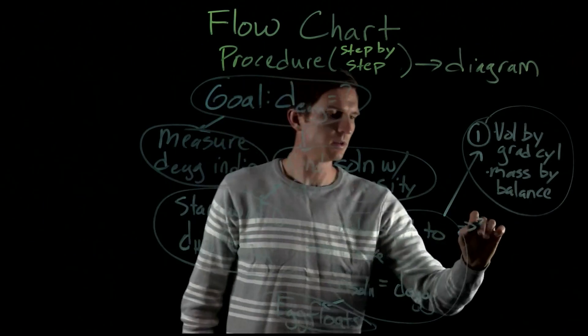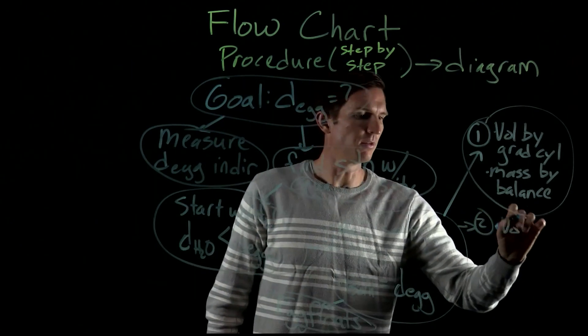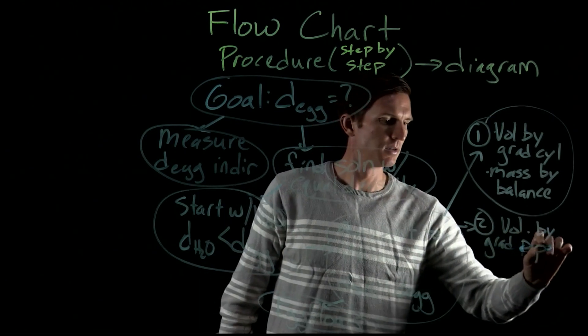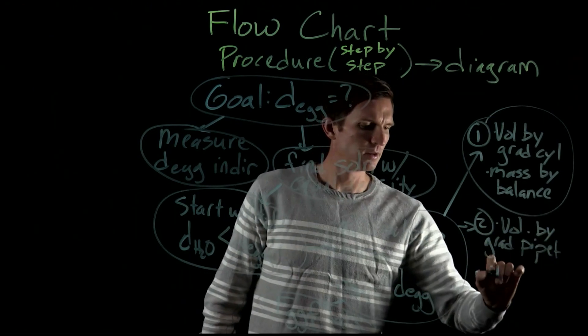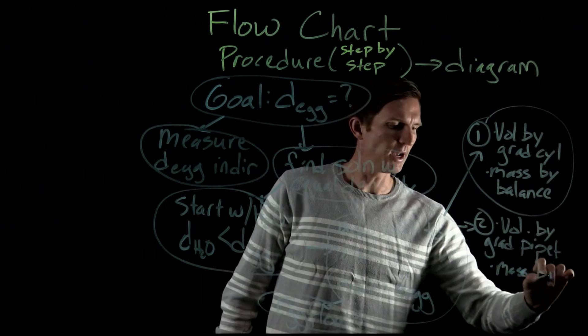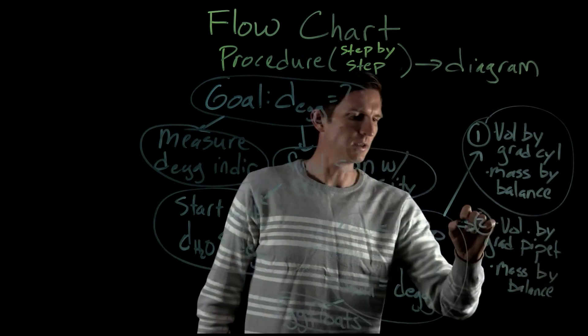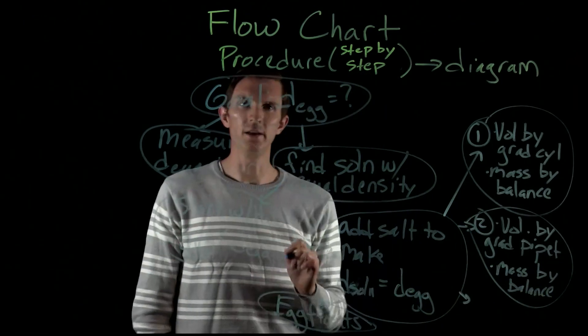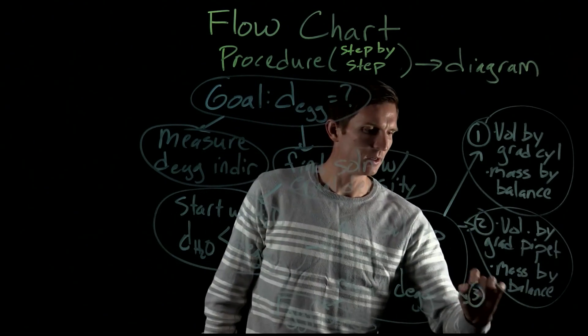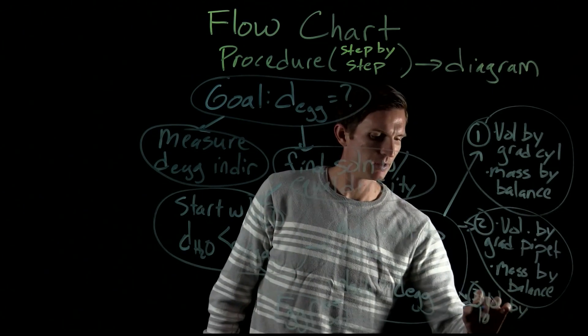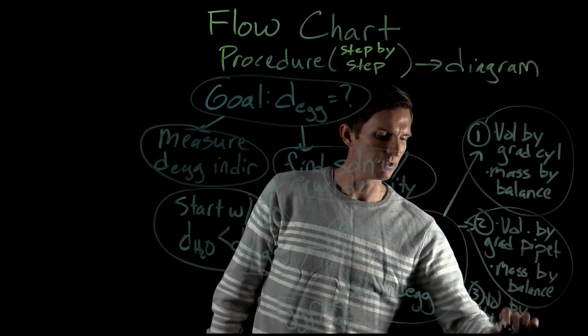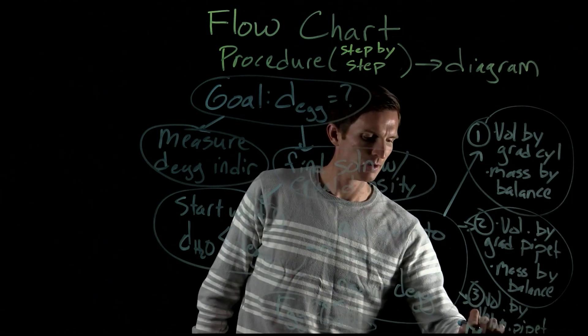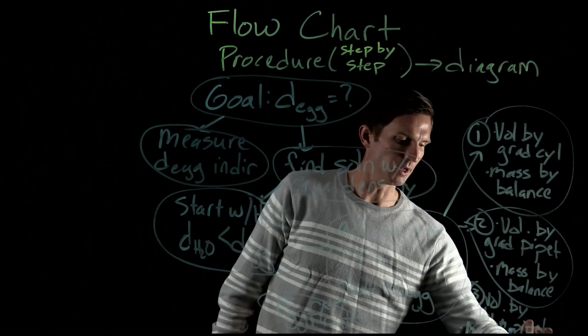Then we're going to do it another way. We're going to determine the volume by a graduated pipette and the mass by balance. That was our second way of doing that. And then our third way would be the volume by a volumetric pipette and then the mass by a balance as well.